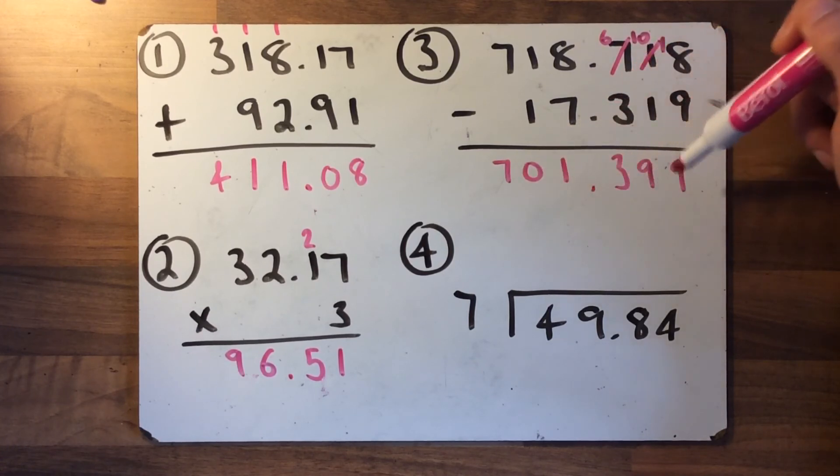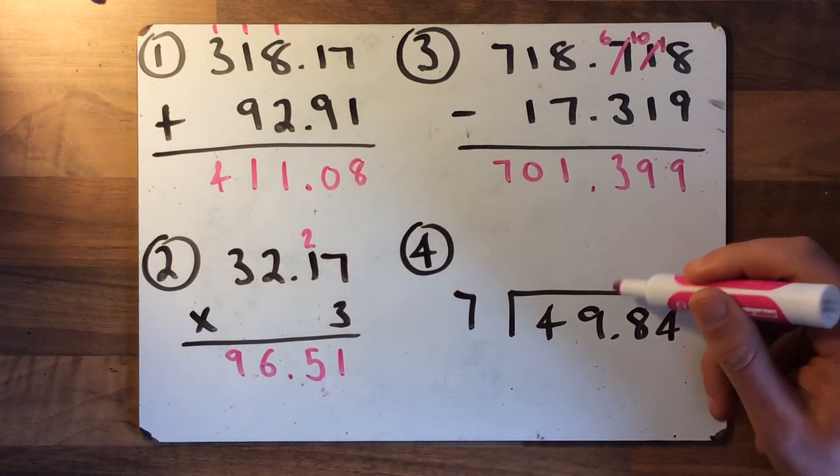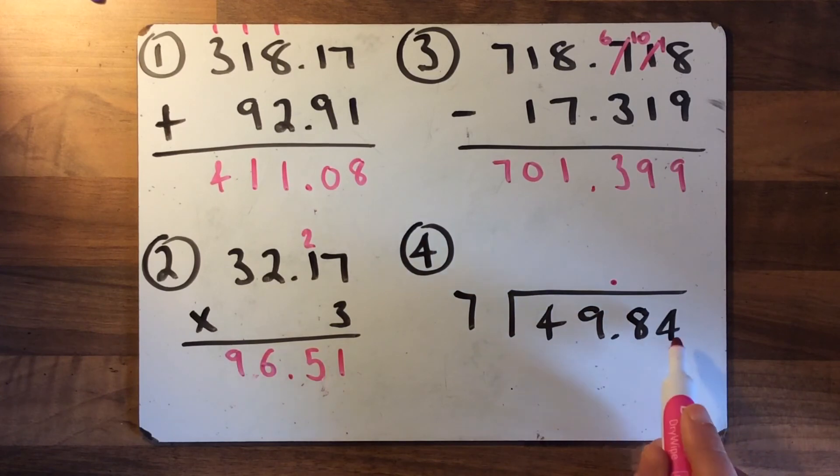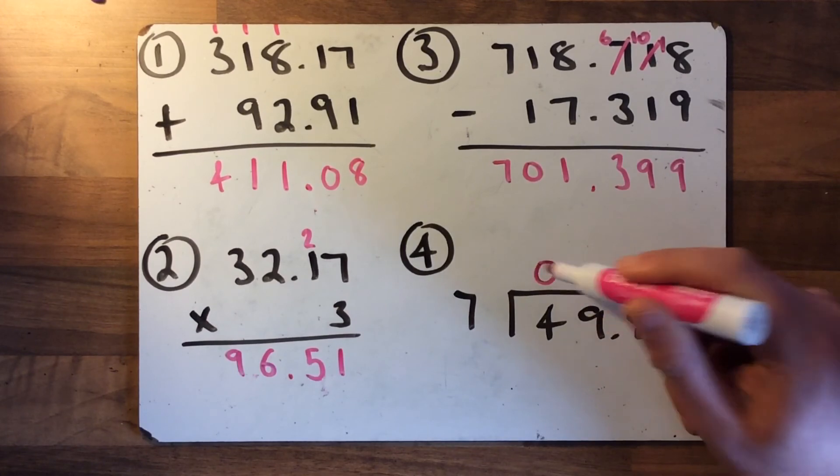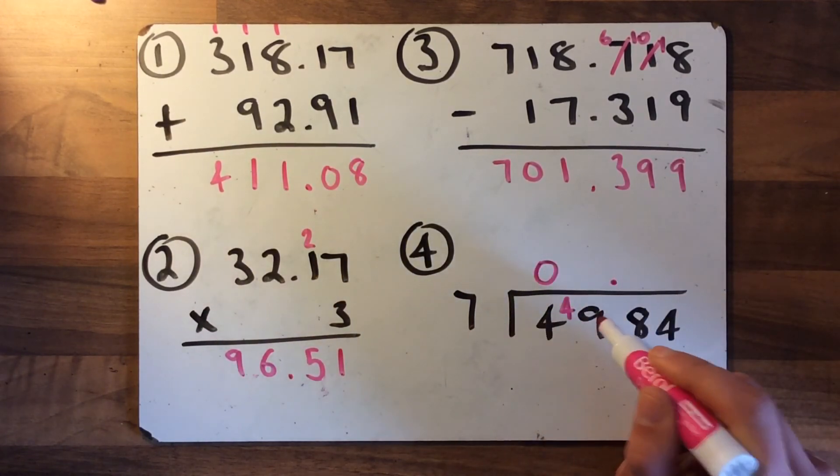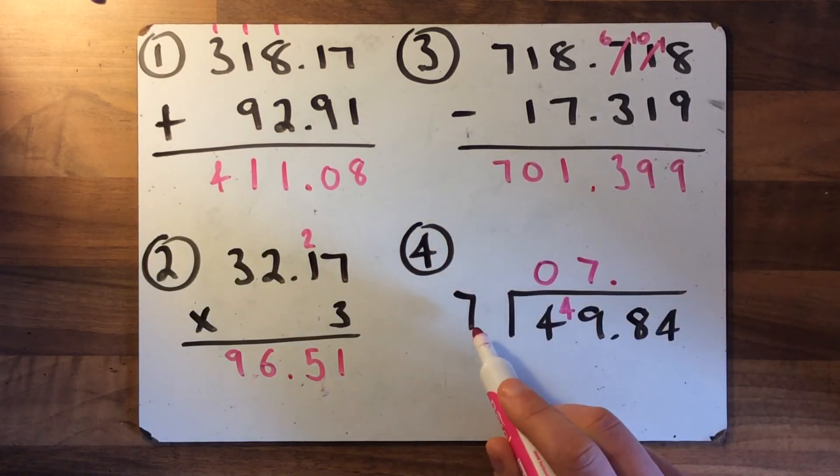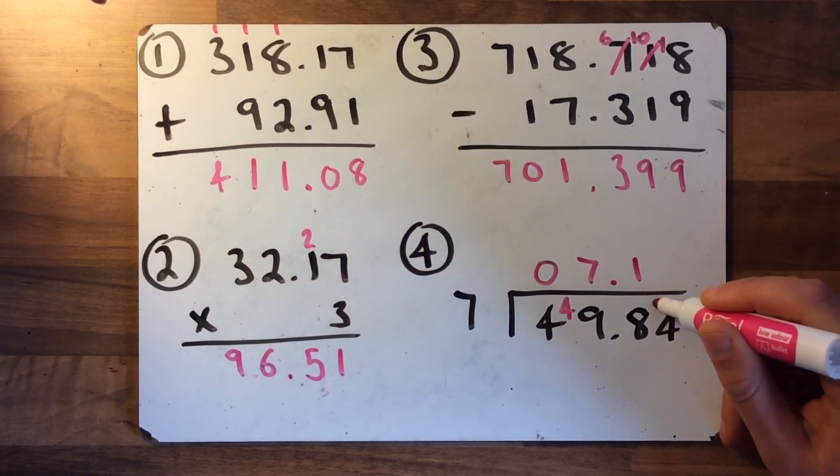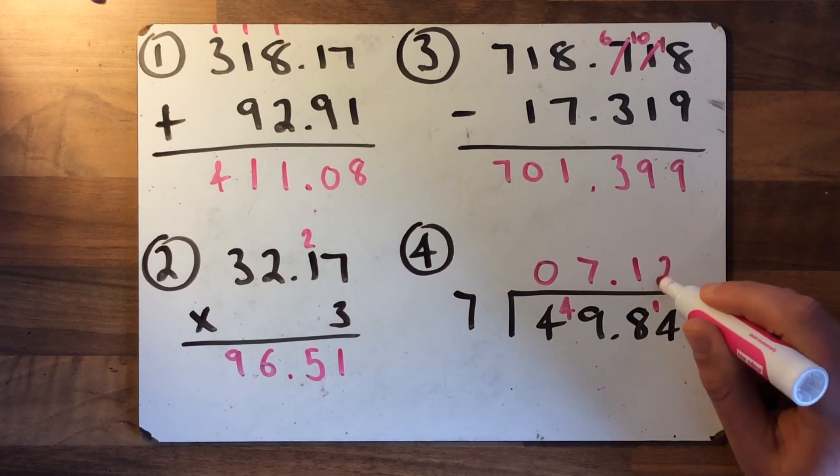And finally we've got a division. Again, golden rule of decimals—the decimal point is going to be here, isn't it? So 49.84 is going to be split evenly seven times. How many times does seven go into four? It doesn't, so the four gets carried over. How many times does seven go into 49? It goes in seven times, there's nothing left over, so we just move on. How many times does seven go into eight? It goes in once and there's one left over. How many times does seven go into 14? It goes in twice. So then we can see our answer is 7.12.